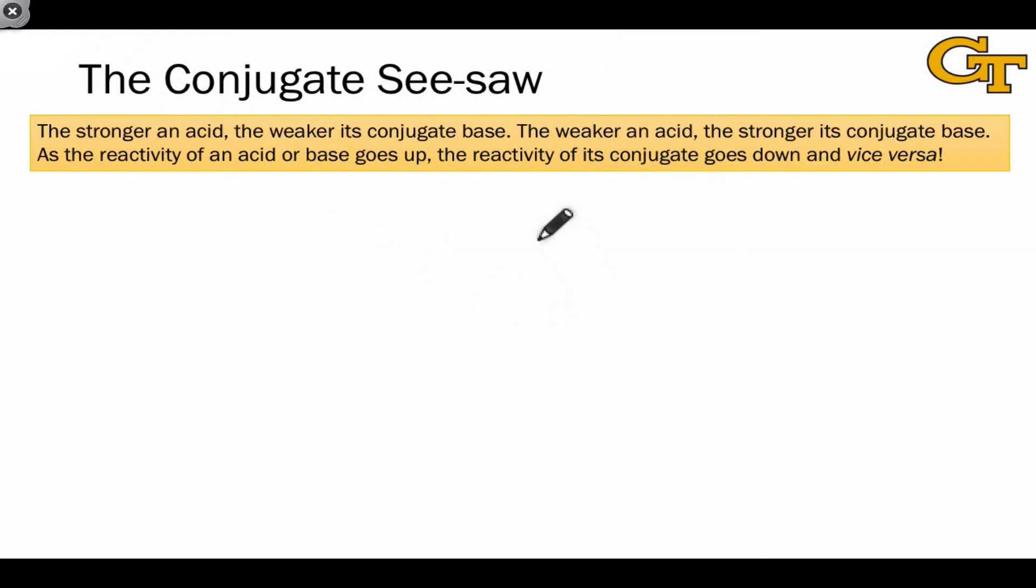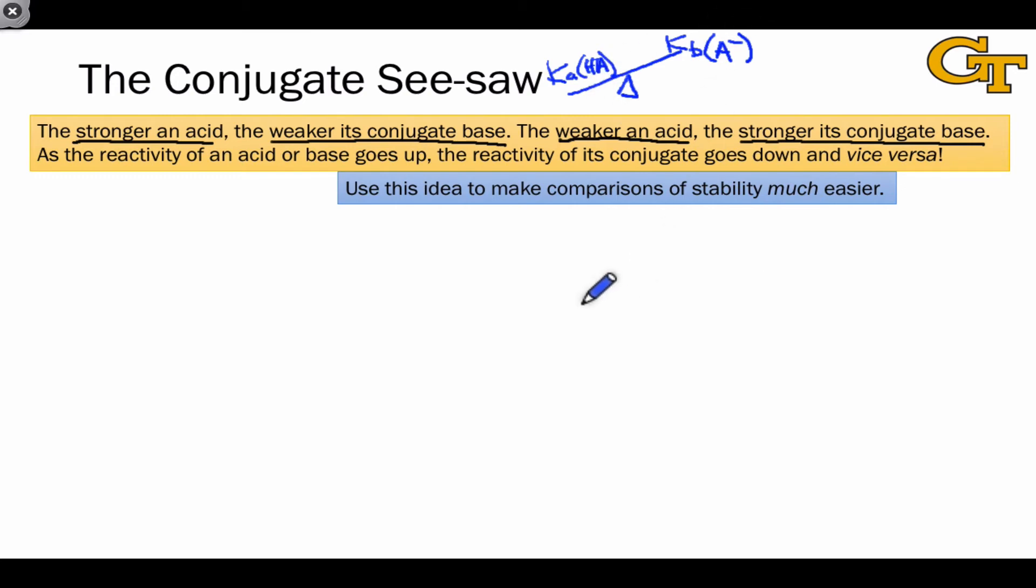The exact numbers here are really not important, but a really important conclusion that we can draw by working with Ka and Kb values is that the stronger an acid is, the weaker its conjugate base is. The weaker an acid is, the stronger its conjugate base is. This is what's known as the conjugate seesaw. As the reactivity of an acid or base goes up, the reactivity of its conjugate goes down, and vice versa. They're related like the two ends of a seesaw. We can use this notion of the conjugate seesaw to make stability comparisons and acidity comparisons much easier.